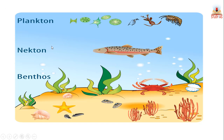Nekton is the group that contains animals which are swimmers. Nektons are relatively large and powerful, and they can overcome water currents. Animals in this group range in size from swimming insects about 2 mm long to the largest animals, like the blue whale. The blue whale is also a very powerful swimmer because it can overcome water currents.